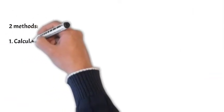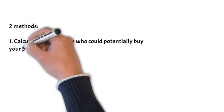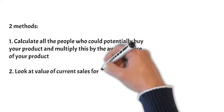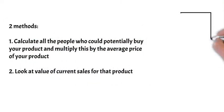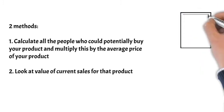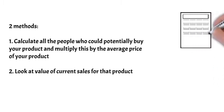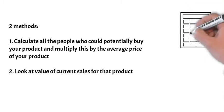When calculating market size, you can do it in two ways. You can either look at all the potential people that could possibly buy your product and times that by the average sale price of a product that you're selling. Or you can look at the current sales of the kind of product that you are selling in the marketplace.